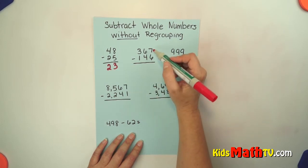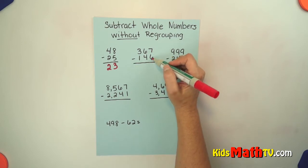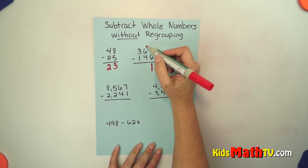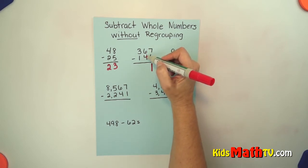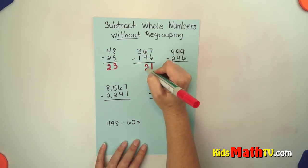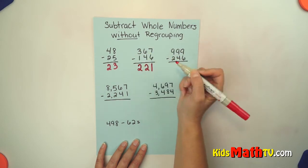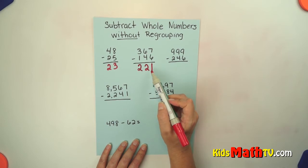A little bit larger problem. Again we start in the ones place. If we have 7 and we take 6 away from that there is 1 left over. In the tens place if we have 6 and we take 4 away from that 6 there are 2 left over. And in the hundreds place there are 3. We're taking away 1 so there are 2 left over. So our answer is 221.